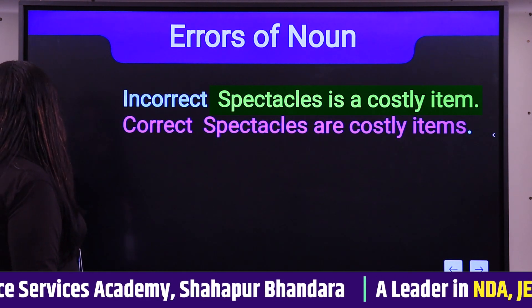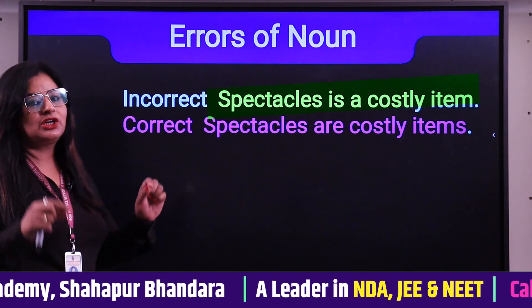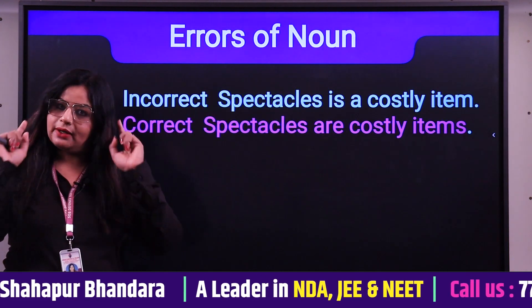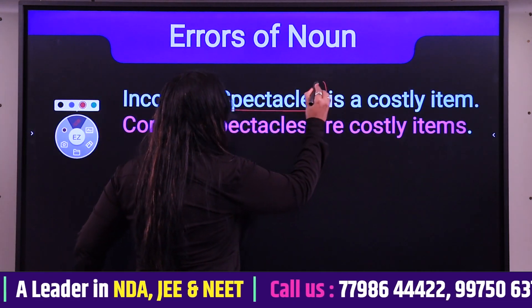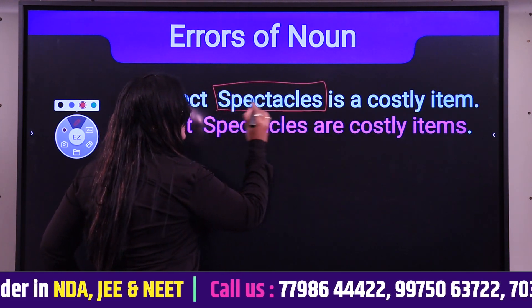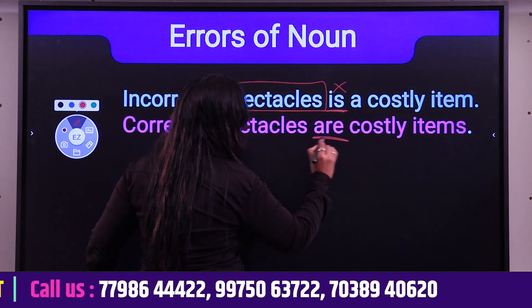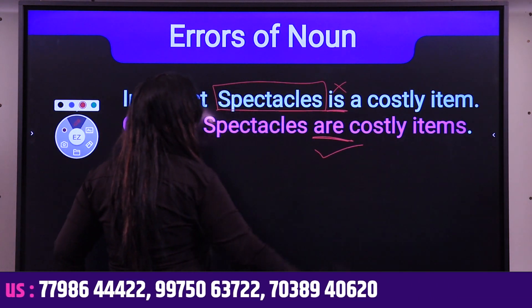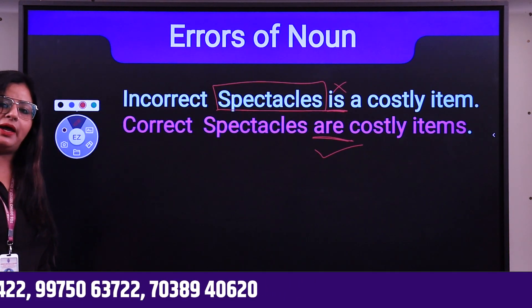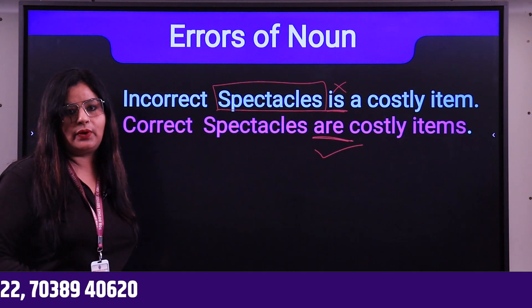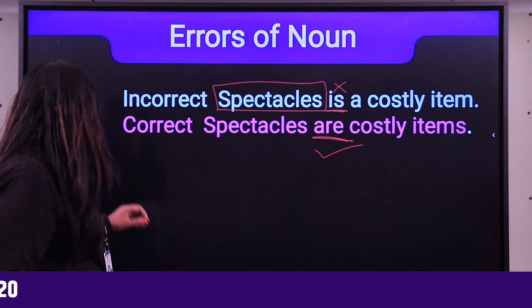Another example: 'Spectacles is a costly item.' Spectacles is a plural noun, so 'is' is wrong here — it should be 'are.' Correct: 'Spectacles are a costly item.' Students should now understand where and how errors occur with these plural nouns.